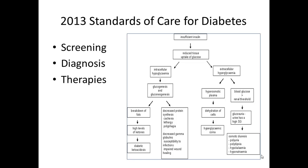Perhaps a patient visits their podiatrist with an ingrown toenail that won't heal. Hyperglycemia increases fungal and bacterial infections, as microorganisms thrive in sugar-laden tissues. A woman may also learn from her OB-GYN that her constant vaginal infections are really due to hyperglycemia.